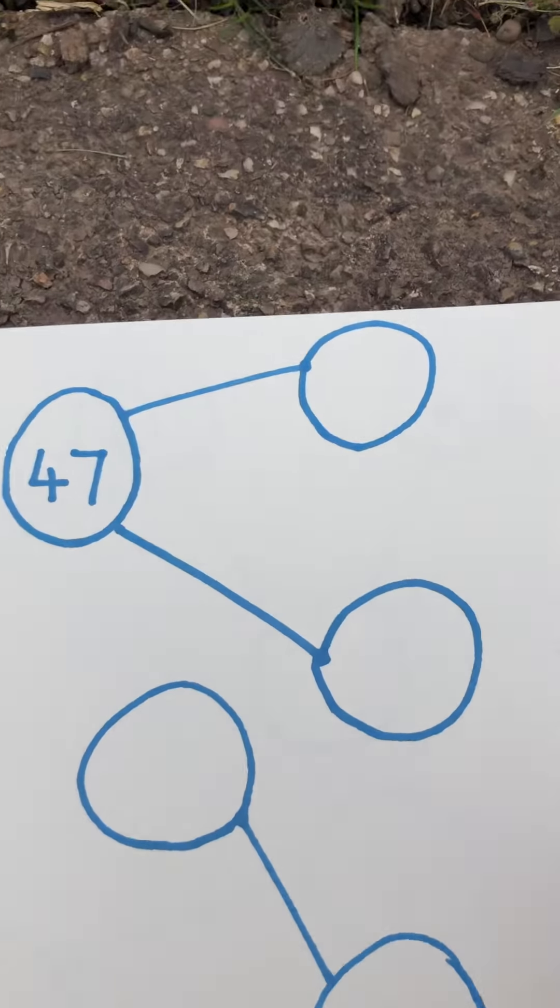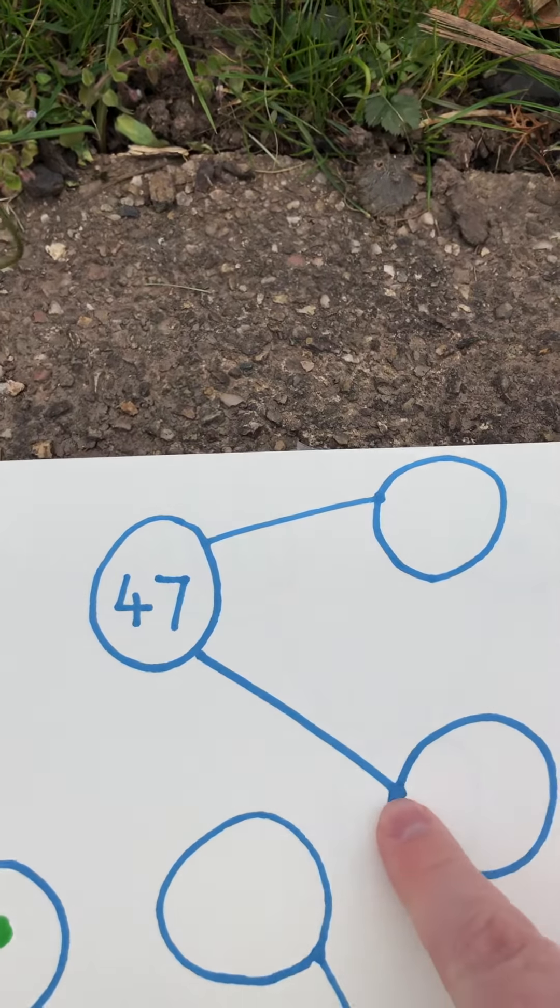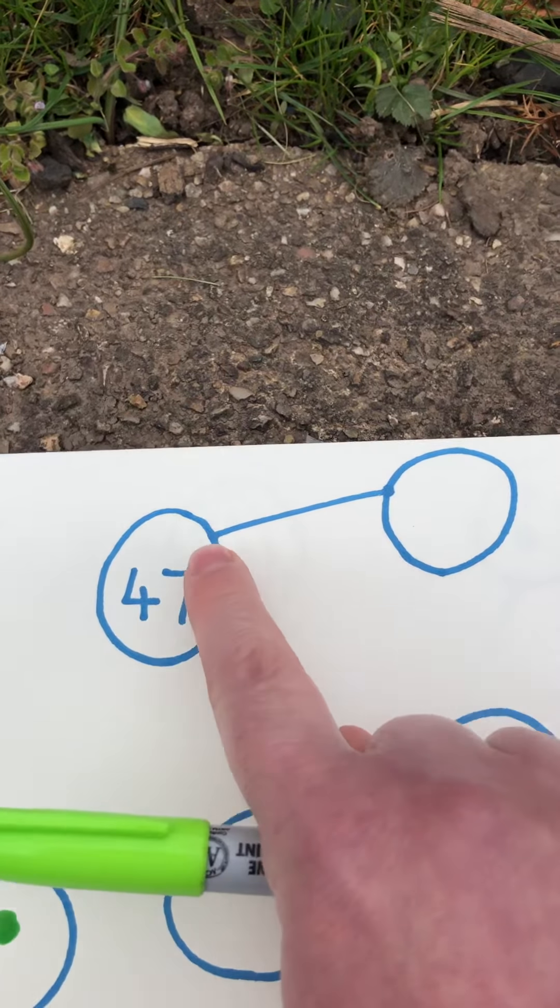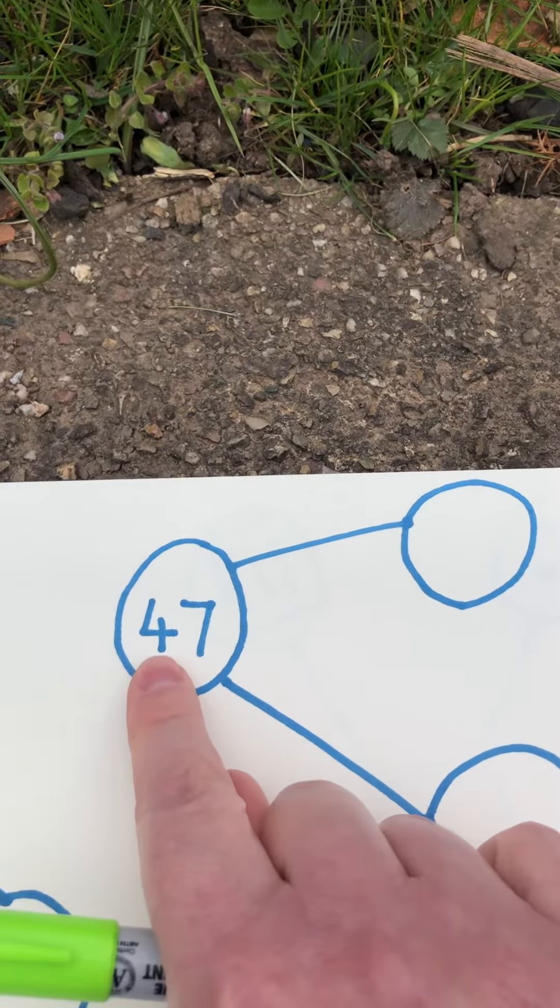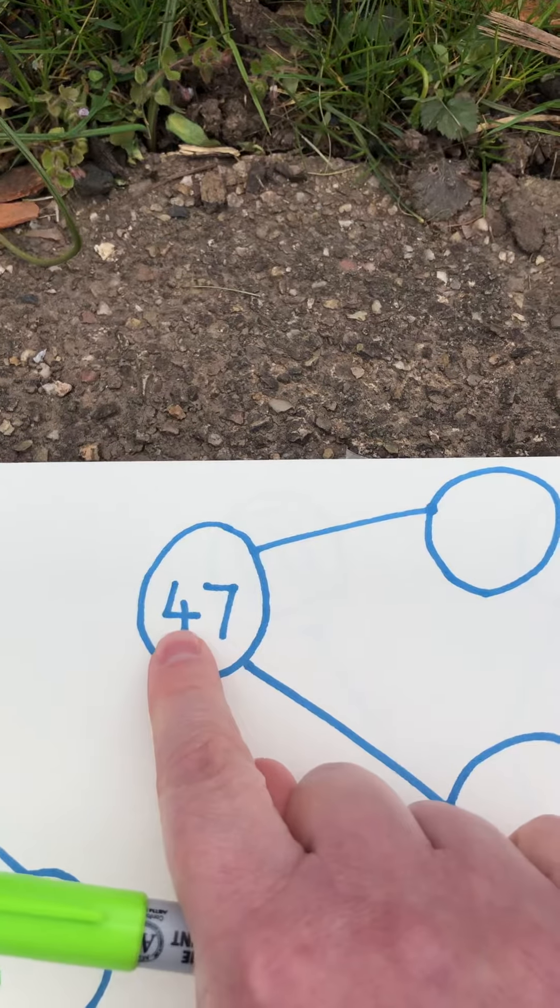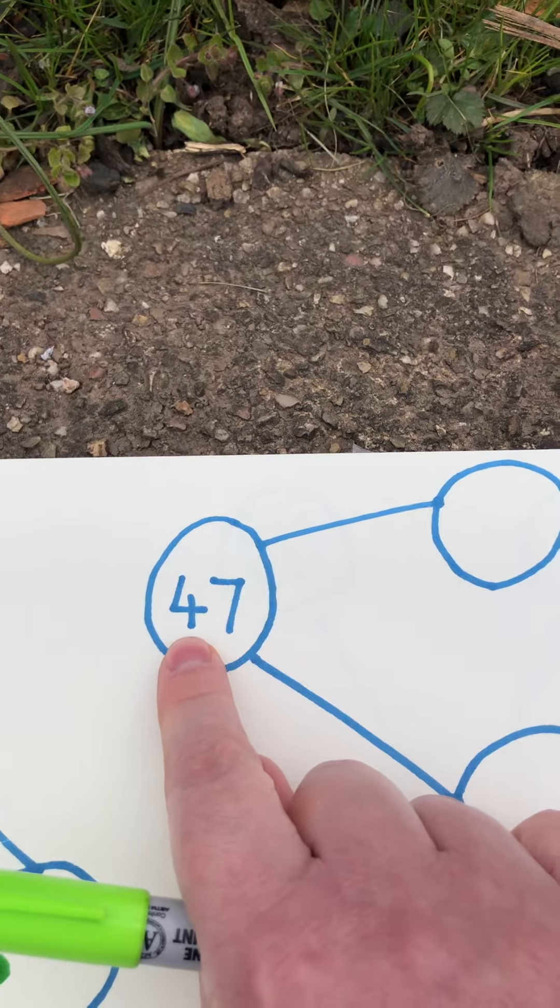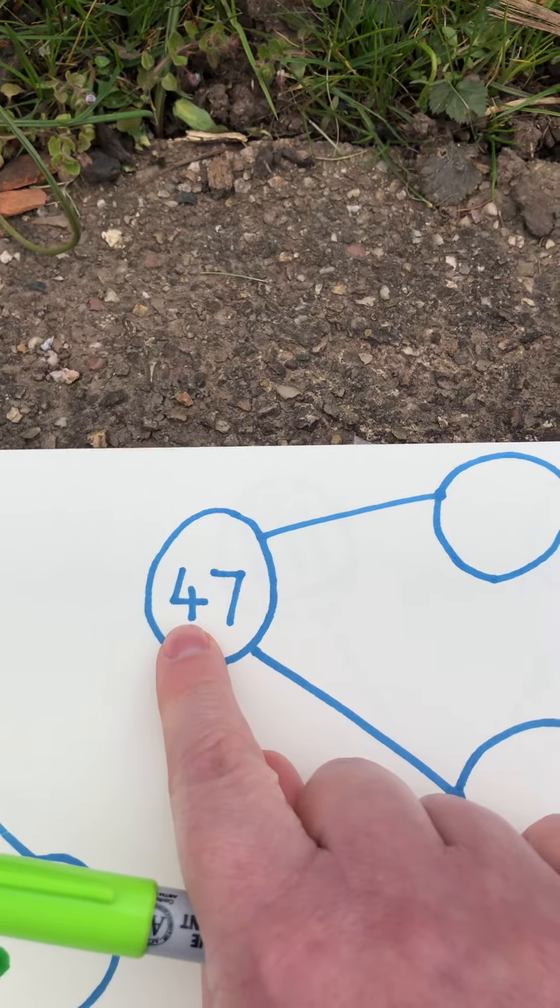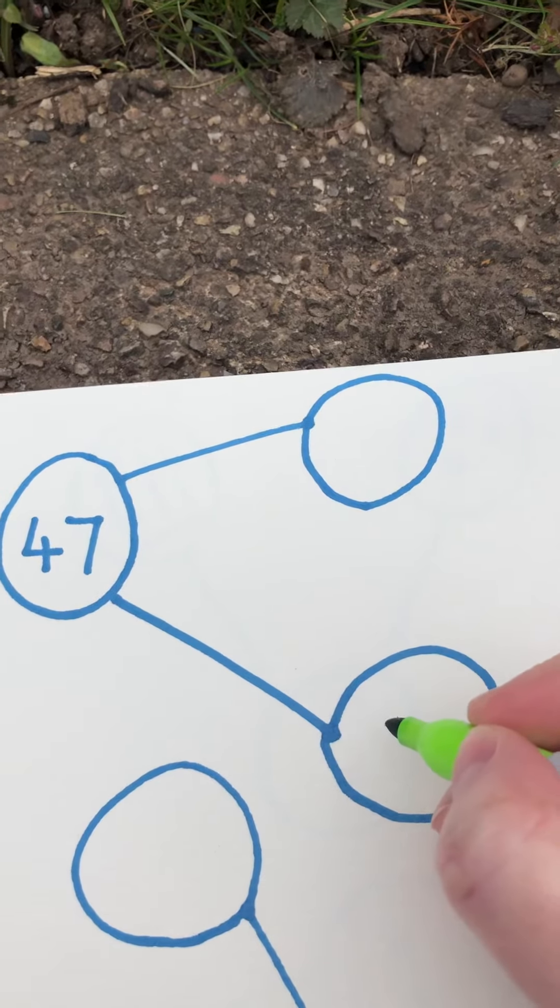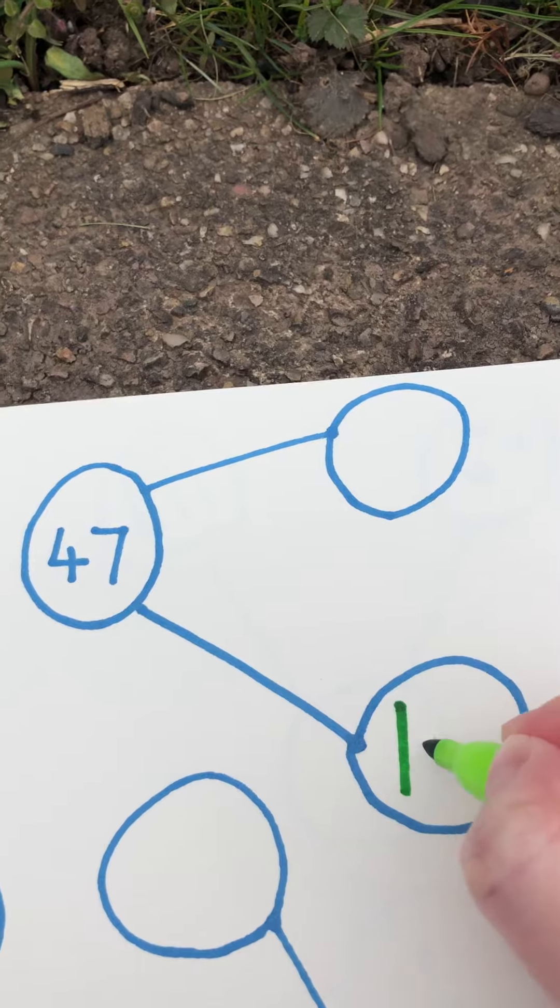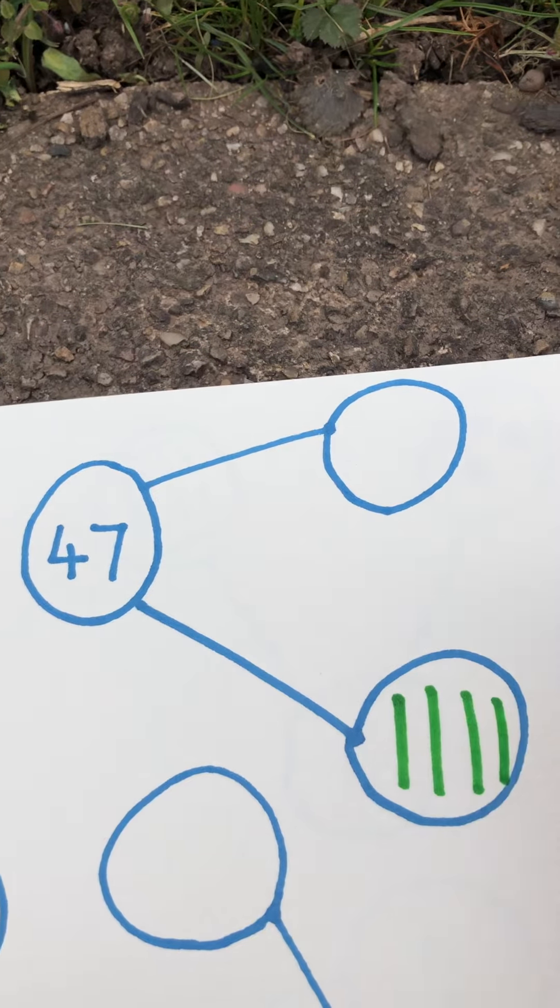Let's do this one together. Number 47. So remember, part-part-whole. All the roads always lead to the whole. So make sure you're looking at the right space. So this is number 47. So first of all, let's look at how many tens are in 47. There are 4. So we come down here and we're going to represent the 4 tens as 4 rods.